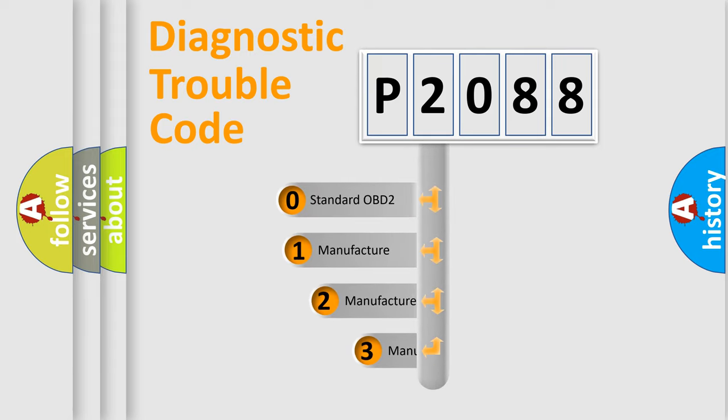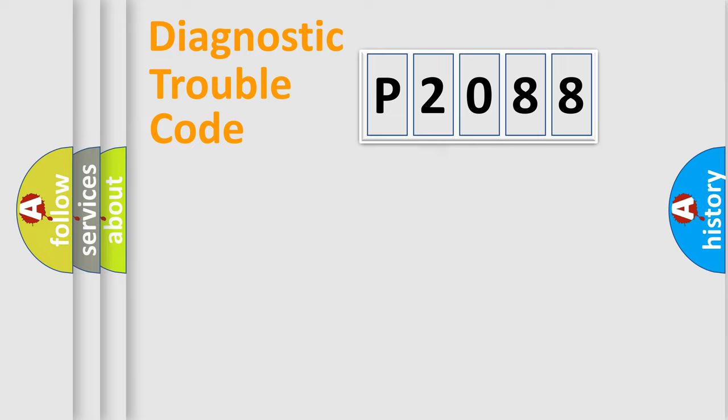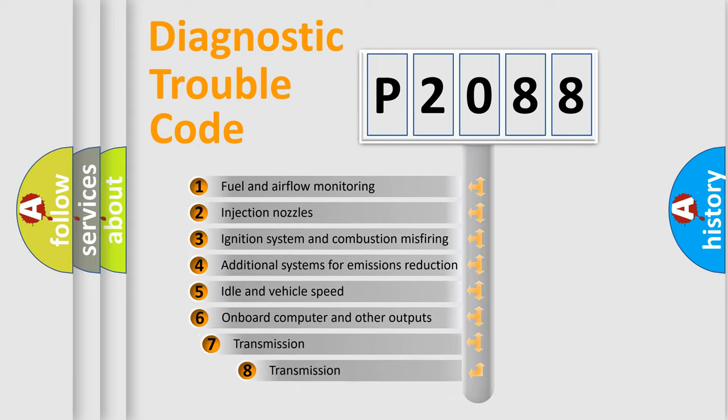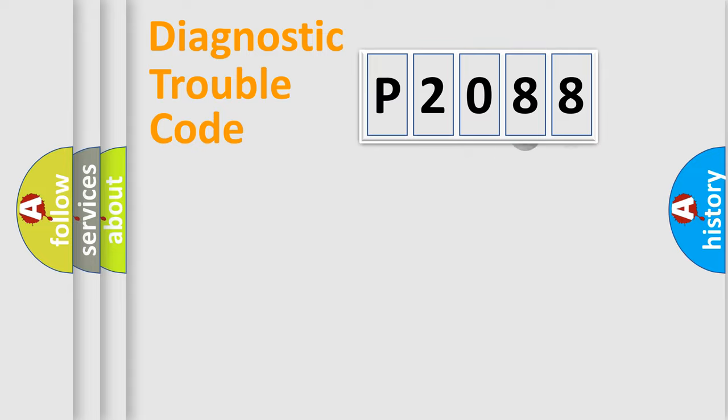If the second character is expressed as zero, it is a standardized error. In the case of numbers 1, 2, 3, it is a manufacturer-specific error. The third character specifies a subset of errors. The distribution shown is valid only for the standardized DTC code.